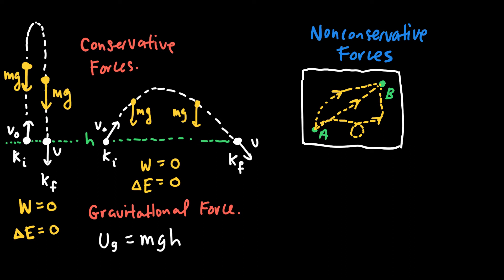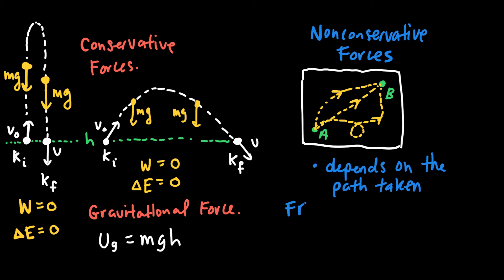The key difference is that the work done by a non-conservative force depends on the path taken. In each of the paths drawn, a different amount of friction acts on the box. We'll use the frictional force — any type of frictional force — as our main example of a non-conservative force.